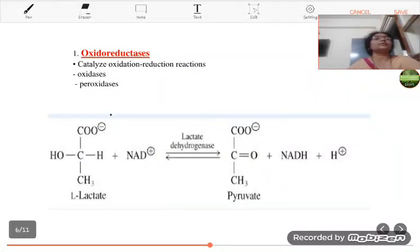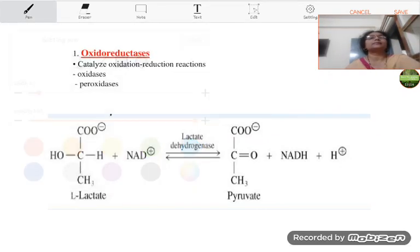Now, we are going to see the very first class of the enzymes and that is the oxidoreductase. These are the enzymes which catalyze oxidation reduction reactions. For example, the lactate dehydrogenase oxidize the L-lactate into pyruvate.